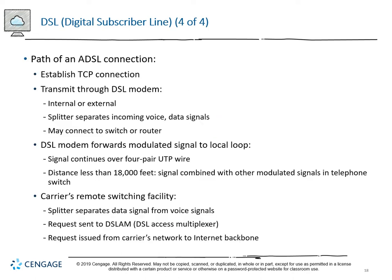The path of an ADSL connection: establish a TCP connection, move through your DSL modem. The splitter performs the filtering operations. The modem forwards the modulated signal to your local loop over four-pair UTP wire. If it's less than 18,000 feet to the CO, the signal is combined with other modulated signals in the telephone switch. At the carrier's remote switching facility, data and voice signals are separated. The DSL access multiplexer processes signal differentiation, and the request is issued from the carrier's network to the internet backbone.